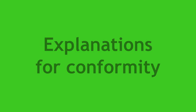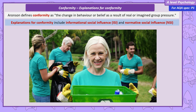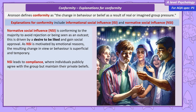There are two explanations for conformity: informational social influence and normative social influence. Normative social influence suggests that the need for social acceptance is a powerful motivator for human behaviour, and individuals will conform because they fear being socially rejected or becoming an outcast. Conformity driven by NSI results in compliance — publicly agreeing with group norms but not changing private beliefs. NSI is emotionally driven: people want to feel connected, supported and valued by their peers, making them more likely to conform to avoid negative feelings associated with rejection. The typical example is peer pressure.